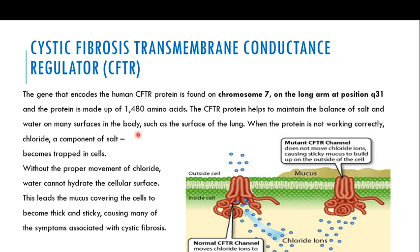When this protein is not working correctly, chloride — a very important component of these fluids — becomes trapped in the cell. Without the proper movement of chloride, water cannot hydrate the cellular surfaces. If water cannot hydrate the cellular surfaces, the mucus covering the cell becomes thick and sticky, causing many of the symptoms associated with cystic fibrosis. Normally, the chloride ion channel allows chloride ions to move outside the cell, attracting water to keep the mucus thin.